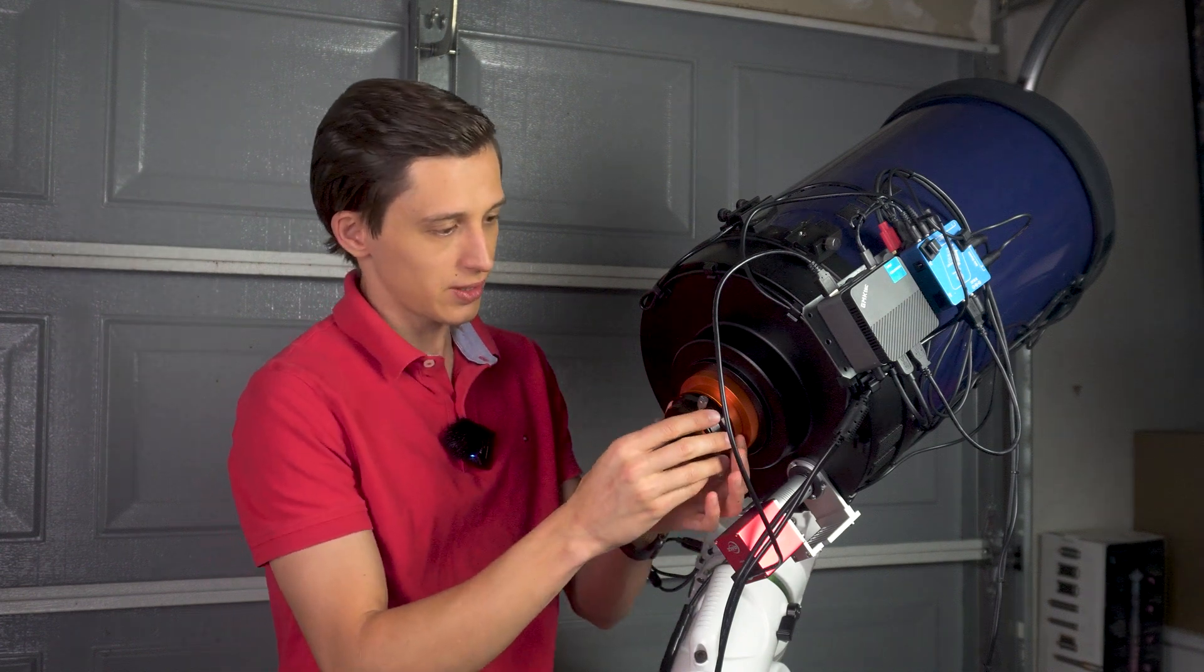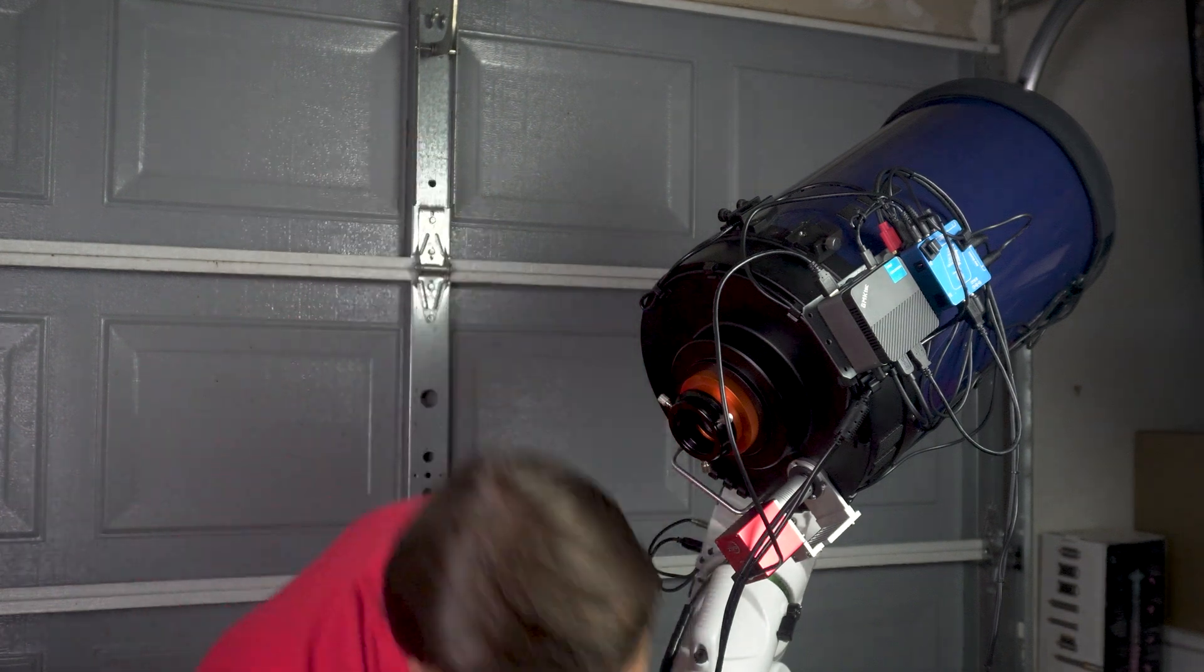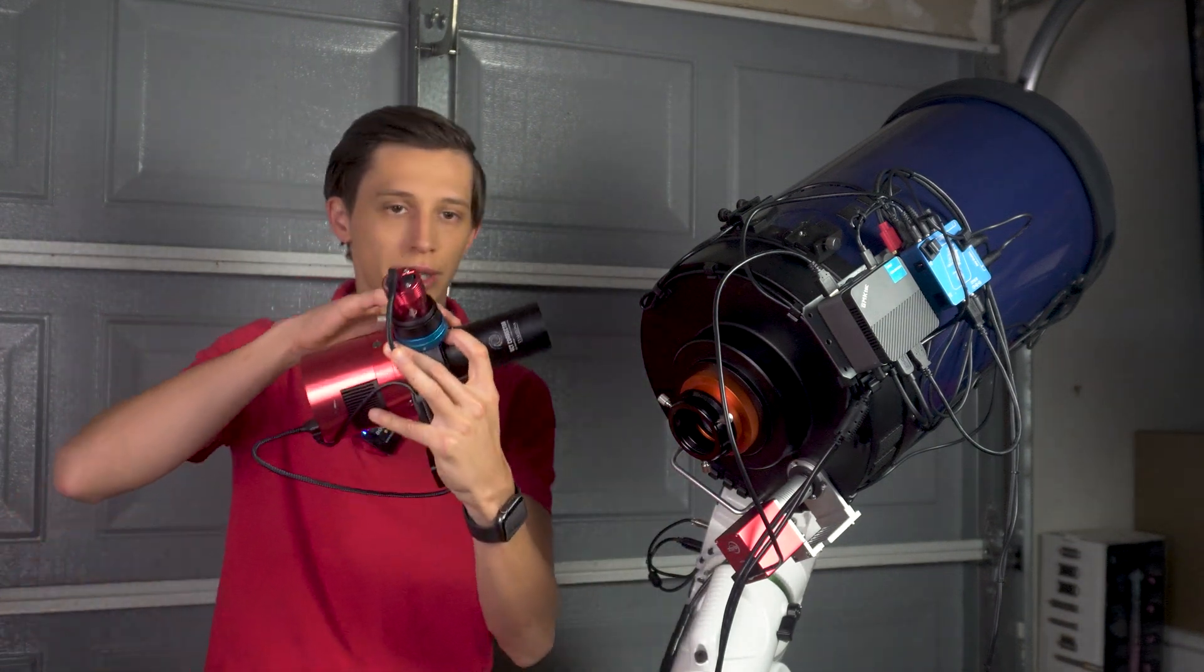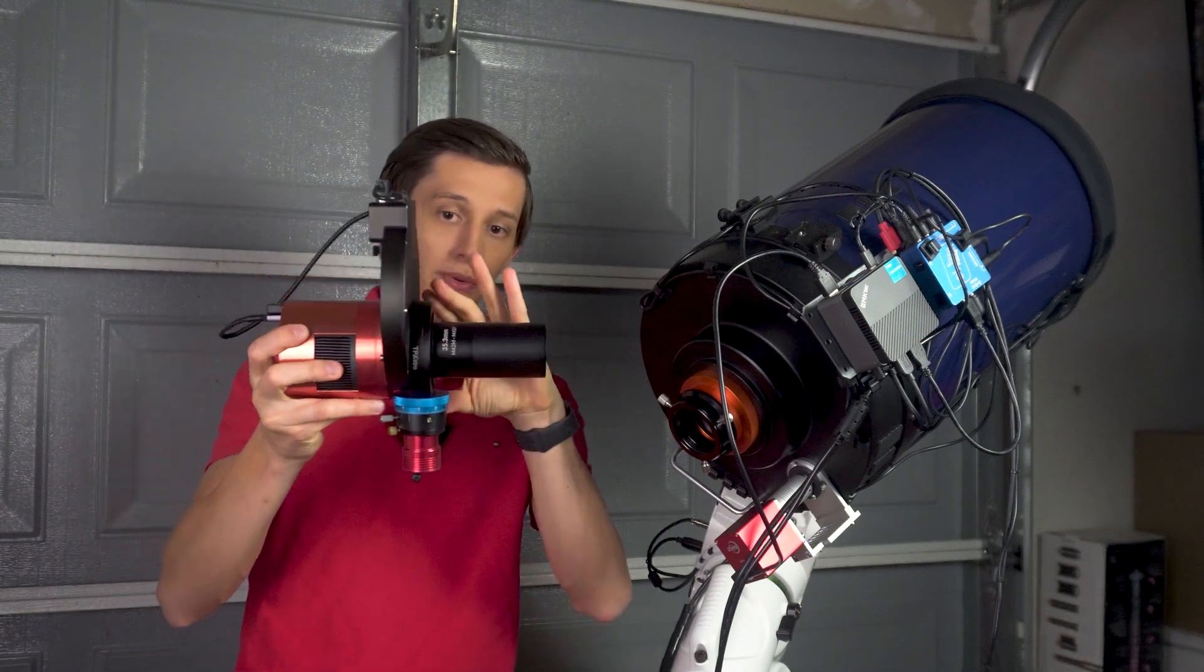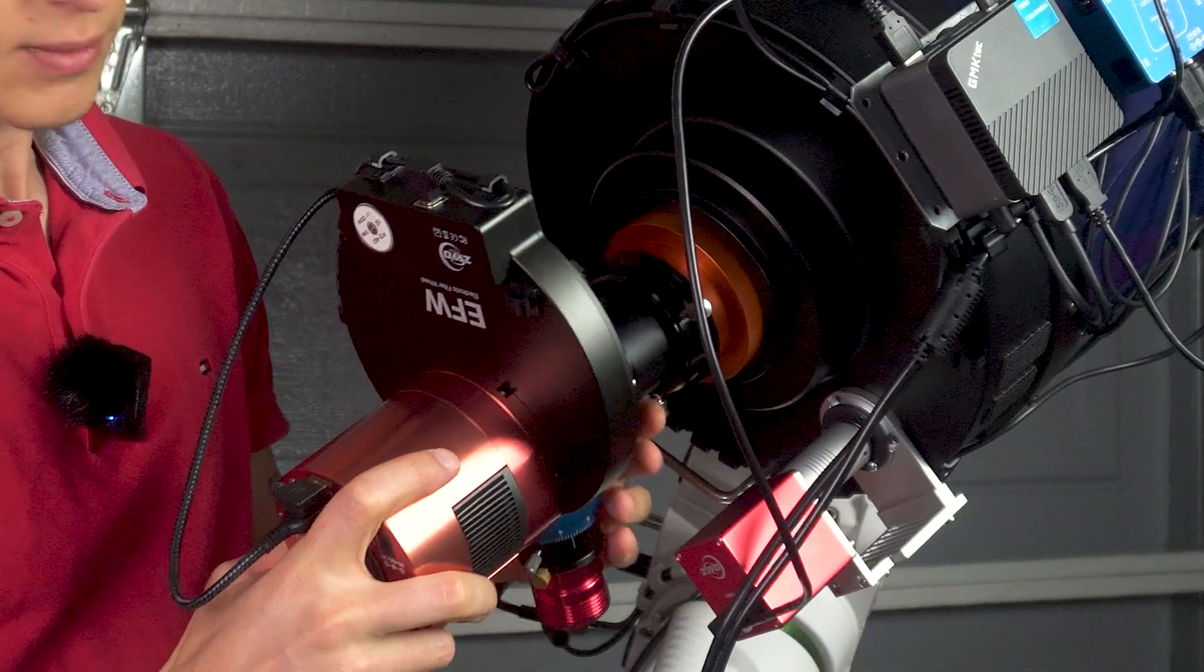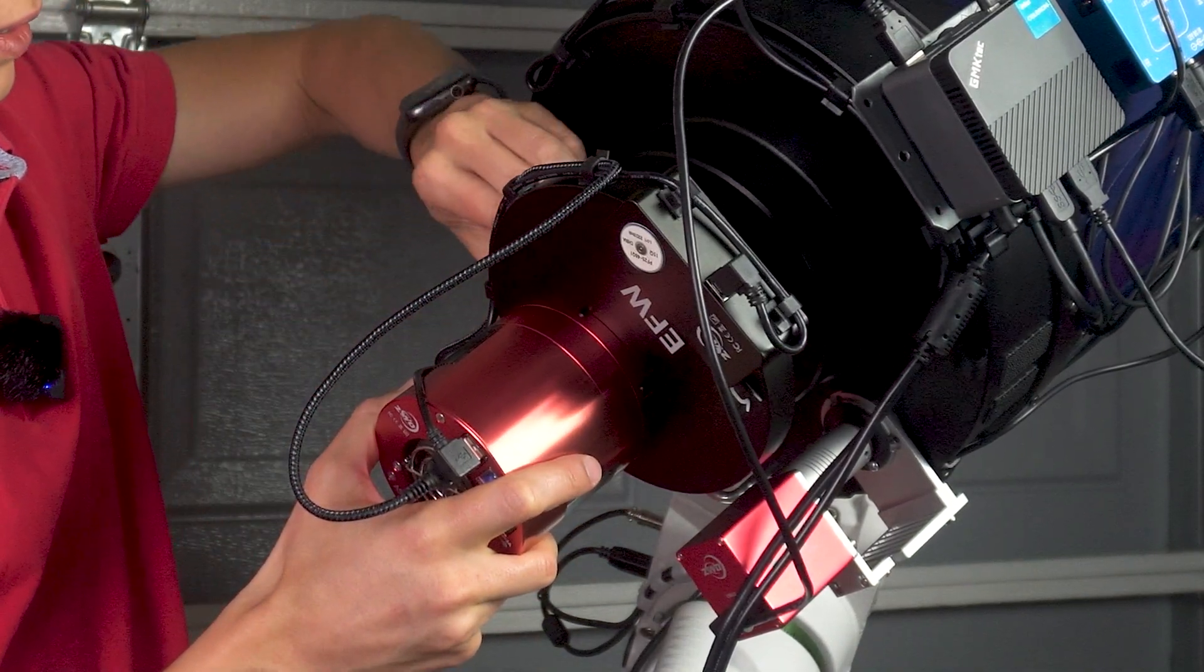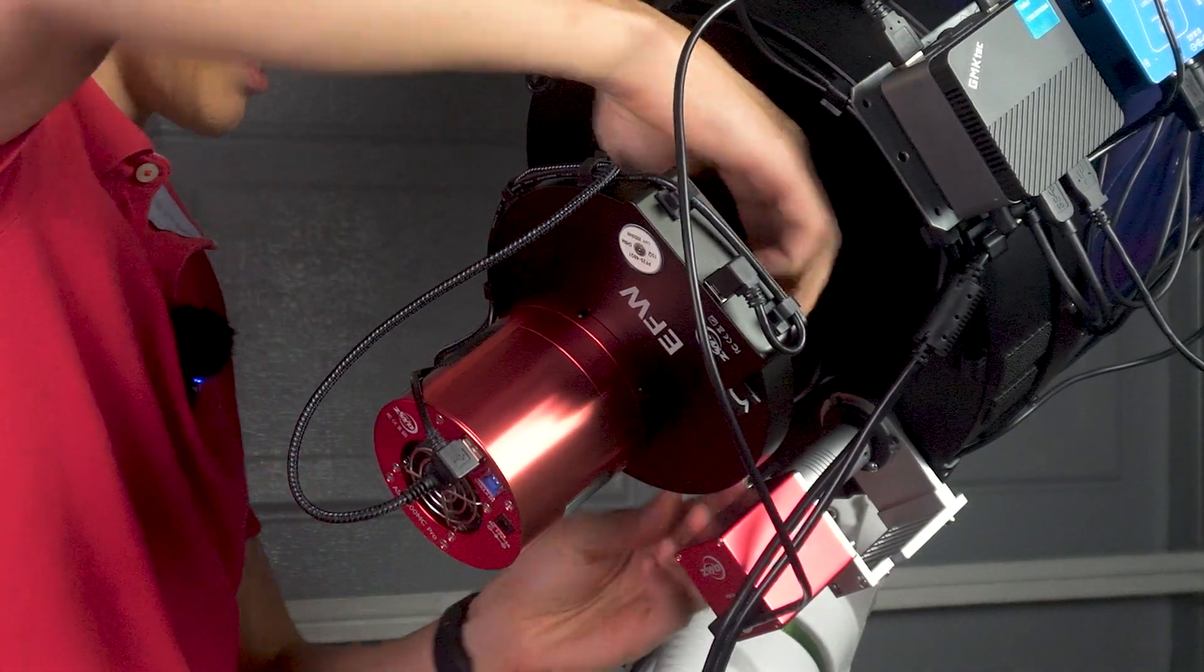You just install it here. All you have to do is if you use the Starizona reducer, which is right here - so we have the Starizona reducer, I have my off-axis guider, filter wheel, and the camera. All you do is just install it.